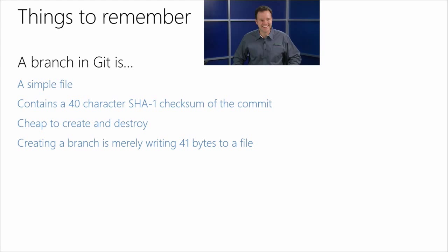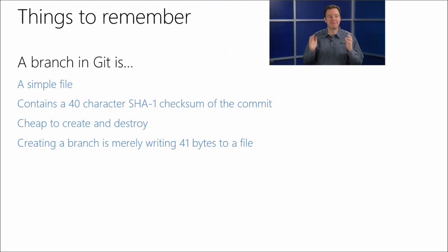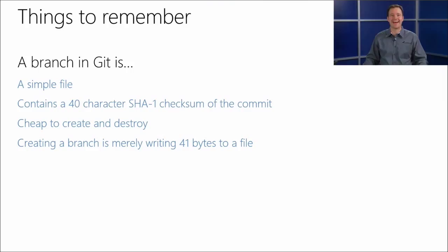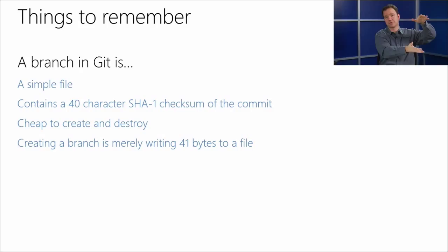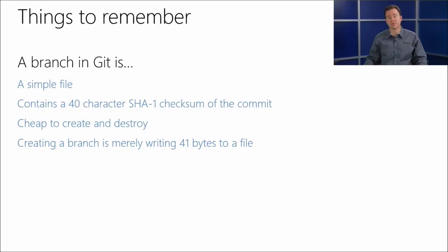A branch in Git is just a simple file with a 40-character SHA-1 hash that points to the commit. Because it's that one file, branches are so cheap to create and destroy. They're not as potentially dangerous as a branch in a centralized VCS where work hangs out for long periods of time. In Git, we create and destroy branches in very rapid succession — maybe several branches a day.